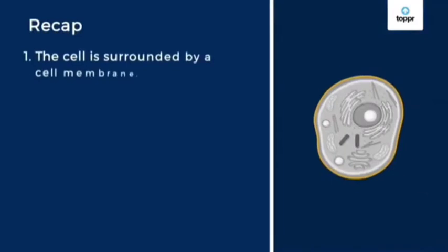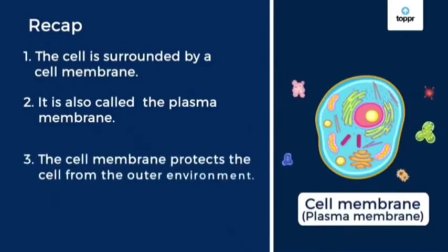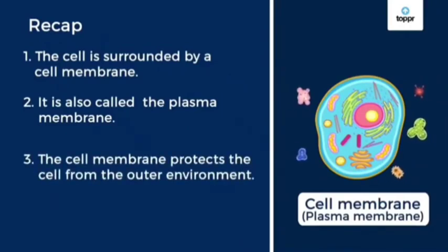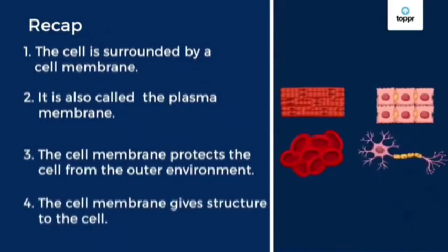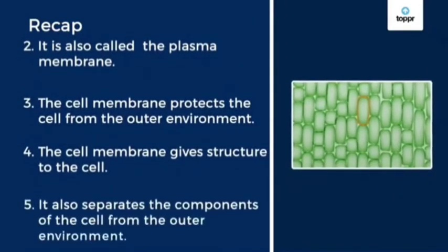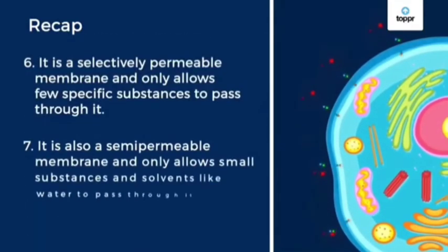Just to recap: the cell is surrounded by a cell membrane, also called the plasma membrane. The cell membrane protects the cell from the outer environment and gives structure to the cell. It also separates the components of the cell from the outer environment. It is a selectively permeable membrane and a semi-permeable membrane, allowing only a few specific substances to pass through it.